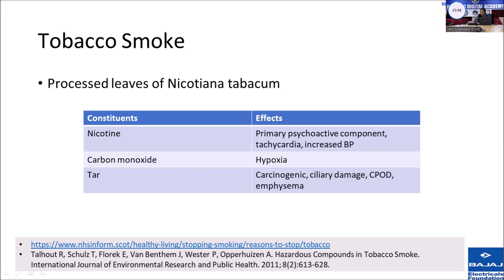Another component is the tar. The tar contains the particulate matter which is suspended in the smoke, and it consists of a lot of substances. Some molecules like acroline and hydrogen cyanide cause damage to the respiratory mucosa — it damages the cilia and prevents movement of the debris and microbes out of the respiratory tract. Some of the polycyclic aromatic hydrocarbons and tobacco-specific nitrosamines, or TSNAs, are carcinogenic and carry a risk of lung cancer.